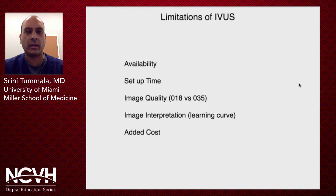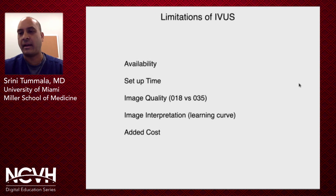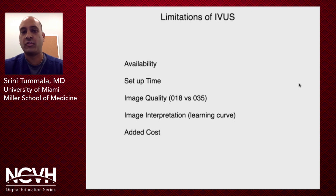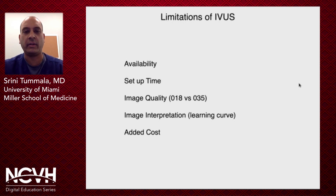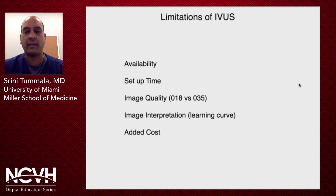IVUS has limitations as well. Availability is a problem — not everybody has it. There is a learning curve for your techs, nurses, and crew. Image quality is better with an 035 system compared to an 018, but getting an 035 system through a CTO or a small tibial vessel is not ideal. Image interpretation takes time and there is a learning curve with that, and there's obviously added cost when using it.